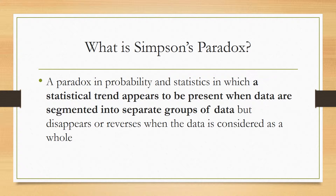First off, what is Simpson's Paradox? Its technical definition is a paradox in probability and statistics in which a statistical trend appears to be present when data are segmented into separate groups, but disappears or reverses when the data is considered as a whole. The most important thing to remember from this definition is the presence of the statistical trend.